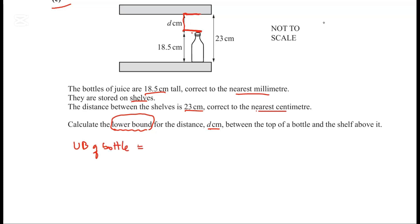The upper bound of the bottle: 18.5 centimeters equals 185 millimeters. To find the upper bound, since it's rounded to the nearest millimeter, we do 1 divided by 2, which is 0.5. The upper bound is 185 plus 0.5 equals 185.5 millimeters. Converting back to centimeters gives 18.55 centimeters.